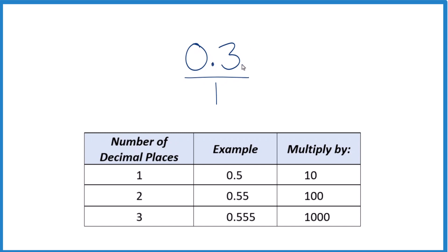To do that, when we have just one decimal place here, we can multiply by 10. So we multiply by 10, and that's going to give us a whole number. So 10 times 0.3, that equals 3.